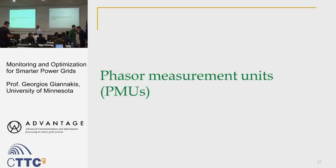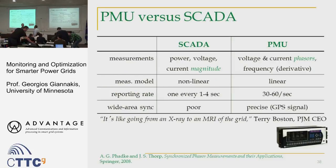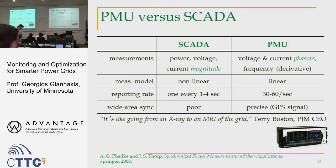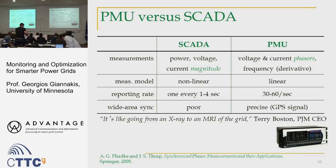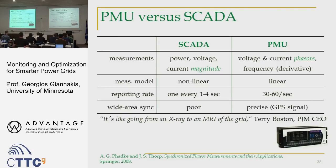The next segment deals with PMUs and these have to be contrasted with conventional meters called SCADA. SCADA provides power, voltage, and current magnitudes — only magnitudes. It reports a measurement every one or four seconds, and the synchronization is poor across areas.